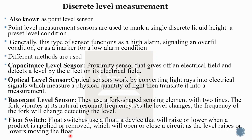In a float switch, we set a particular point at the water level. When the level reaches that point, the switch opens, triggering an alarm. Below that point, the circuit changes accordingly. This is the float switch — a discrete level measurement device.